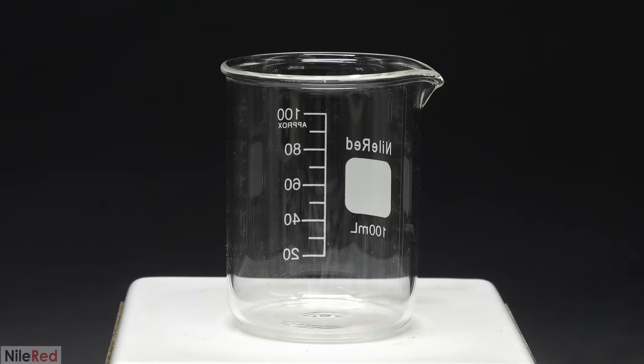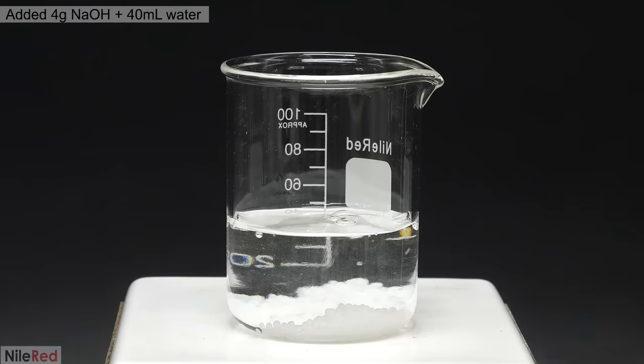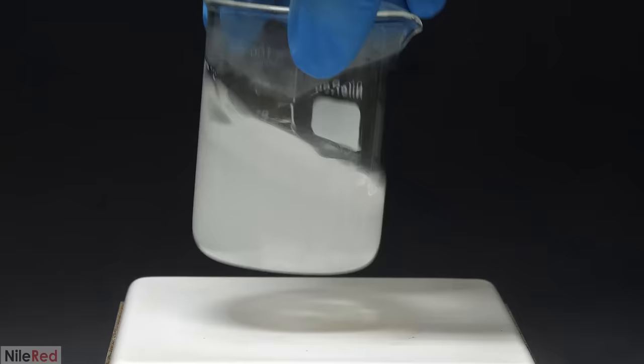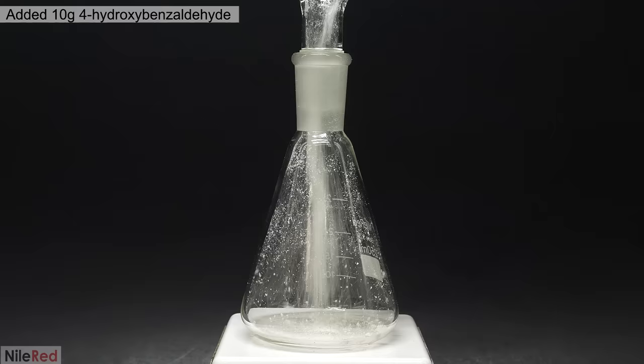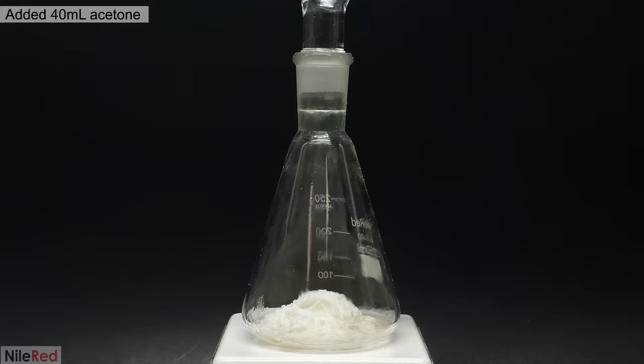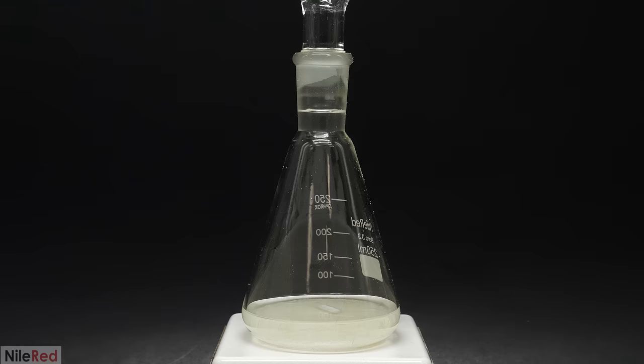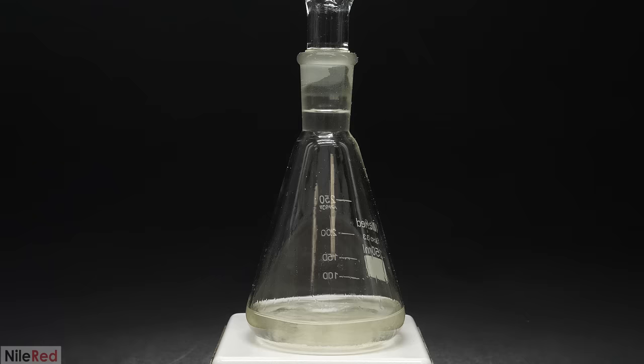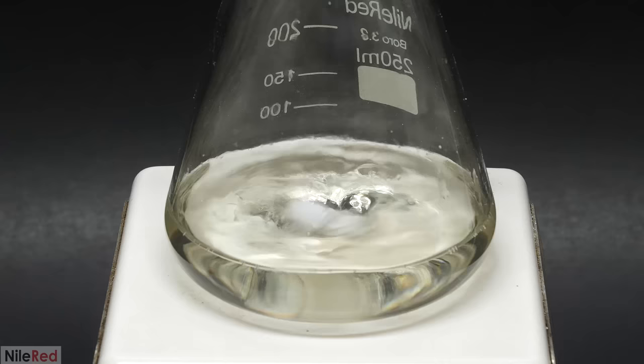With that being said we can finally get started. The first step was to make a dilute solution of sodium hydroxide so I added about 4 grams of it to a beaker followed by 40ml of water. I then got a flask and dumped in 10 grams of the 4-hydroxybenzaldehyde. On top of this I dropped in a stir bar and added 40ml of acetone. It quickly dissolved a lot but to get the rest I had to turn on the stirring. In less than a minute it had all disappeared and I was left with this crystal clear solution.